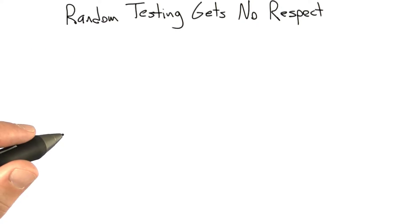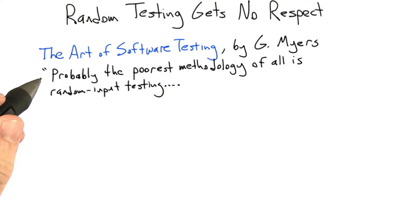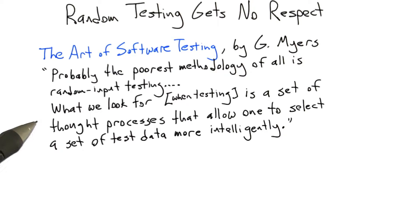For example, one of the classic references on software testing is a book called The Art of Software Testing. In this book, the author talks about random testing, and here's what he has to say: Probably the poorest methodology of all is random input testing. What we look for is a set of thought processes that allow one to select a set of test data more intelligently.